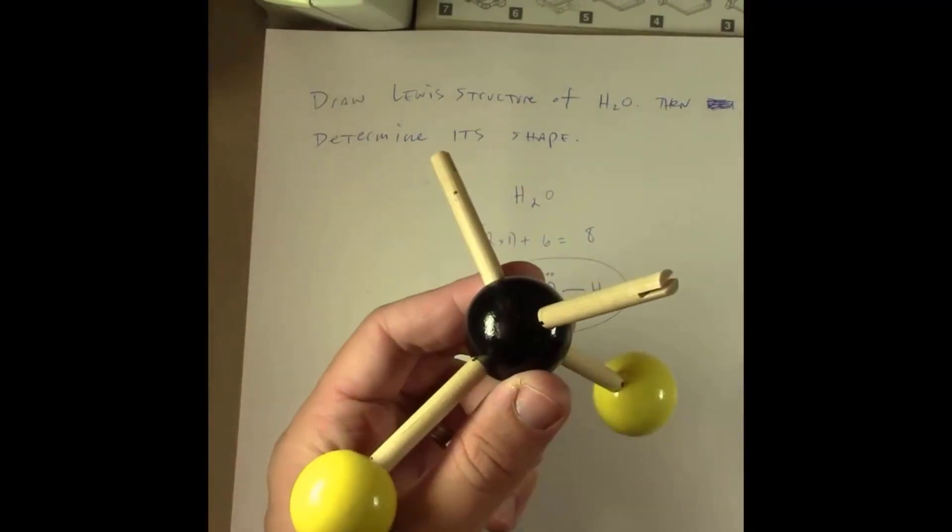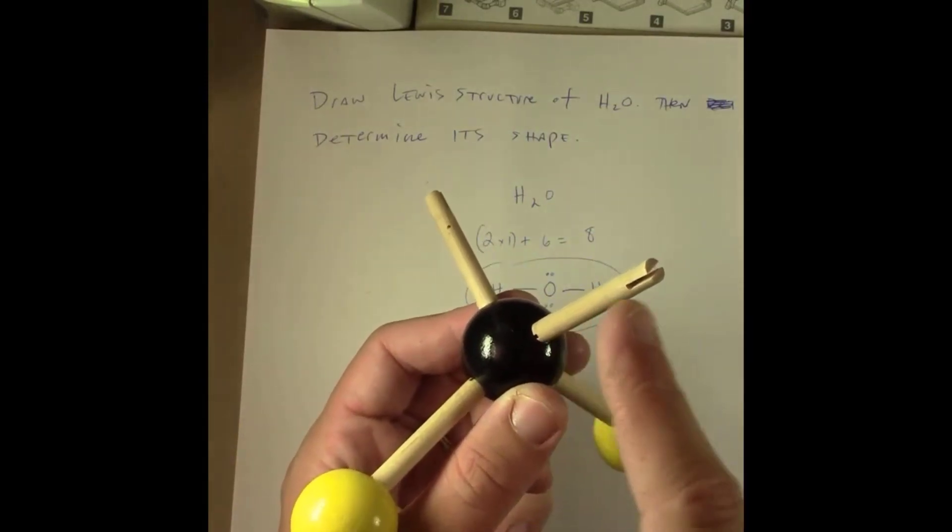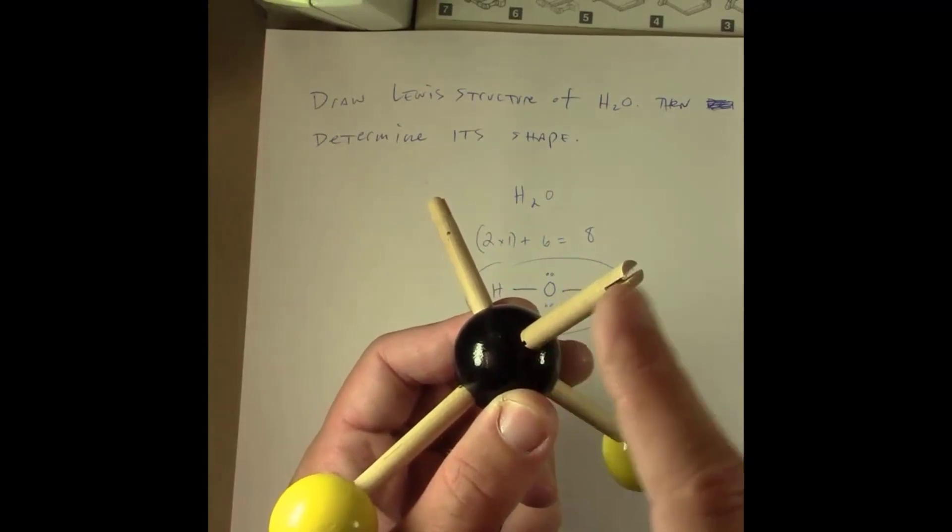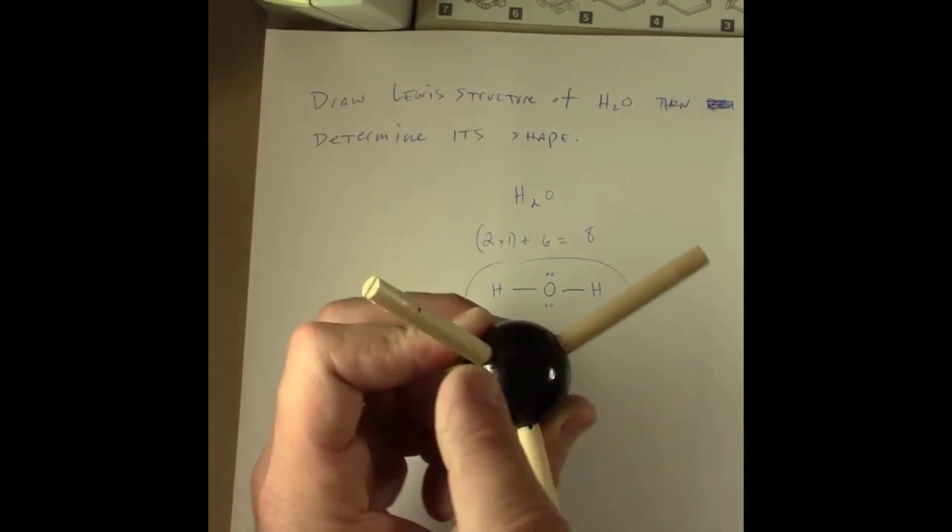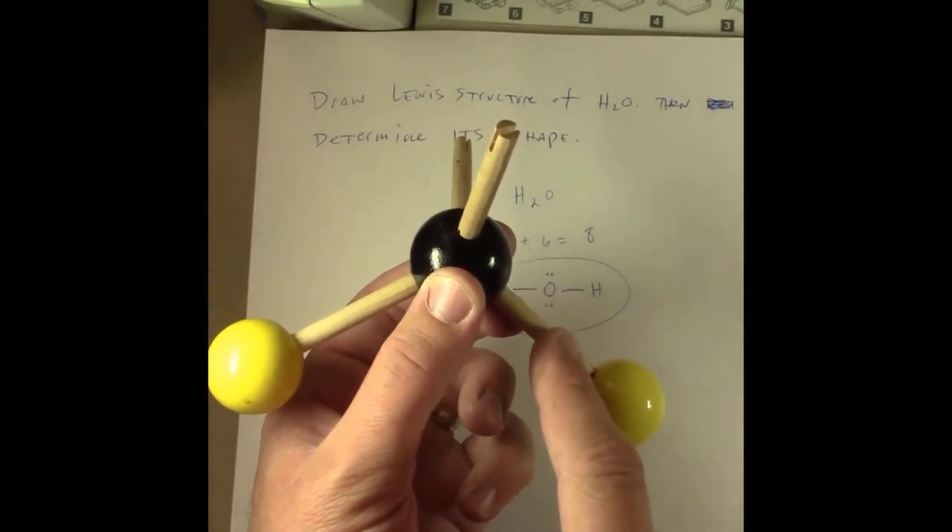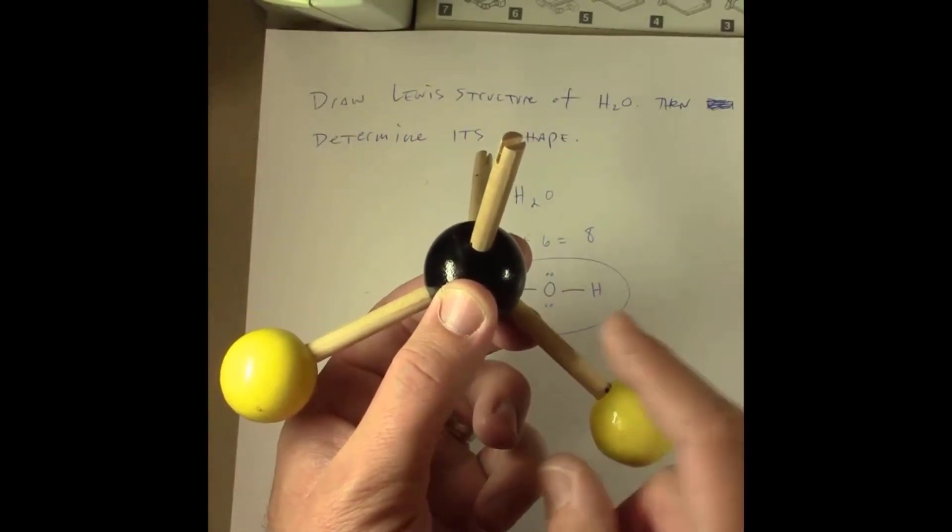If we look at that, you might ask what is the shape of that? Well, this is supposed to represent where one of those lone pairs would be. This would be one lone pair, this is another lone pair with no atom at the end of it.